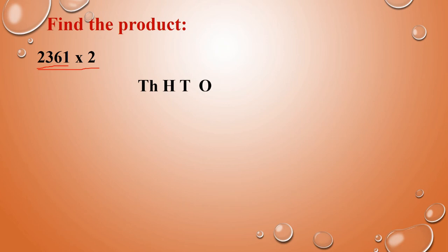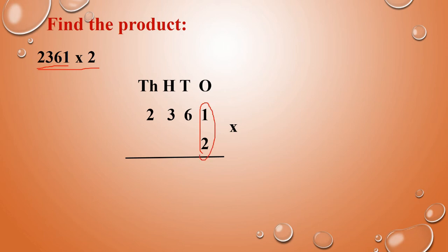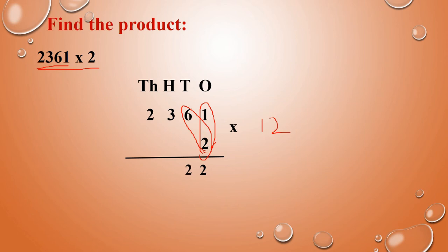This is a 4-digit number. As usual, first you have to arrange the number in column form. 2361 into 2. Now we are going to multiply. First, we have to multiply with the ones place: 1 into 2, that is 2. Next, in the tens place: 6 into 2, that is 12. So we write 2 and carry 1 as reminder to the hundreds place.